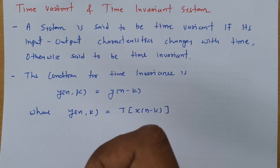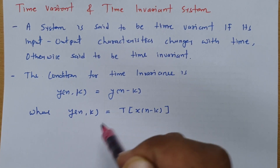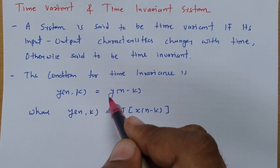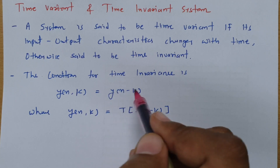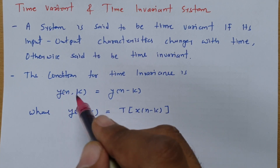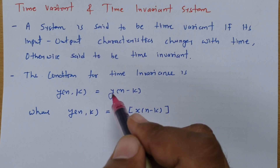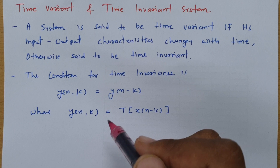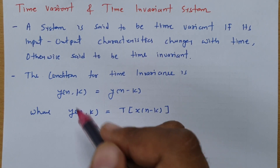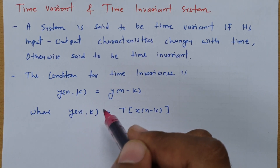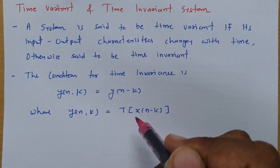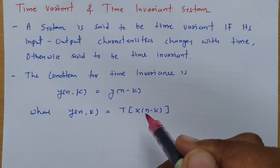So how do we identify whether a system's characteristic is changing or not? For that, the basic condition is: y(n, k) equals y(n minus k). If y(n, k) equals y(n minus k), then one can say the system is a time invariant system. So what is y(n, k)? y(n, k) means the response when the input has a delay of n minus k.